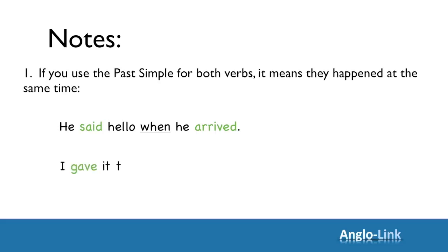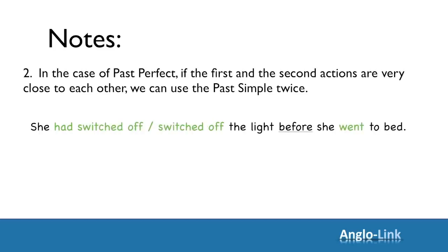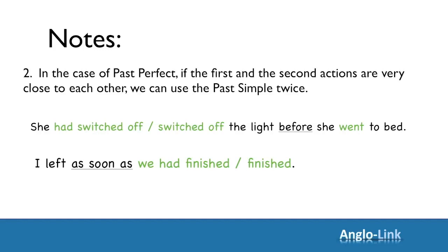Another example: I gave it to her when I saw her. Also, if two actions happen quickly one after the other — very close to each other — you can use the past simple instead of the past perfect. For example, someone switches off the light and goes to bed immediately: you can say 'she had switched off the light before she went to bed' or simply 'she switched off the light before she went to bed.' Similarly: 'I left as soon as we had finished' — because the two actions happened very close to each other — you can use the past simple twice: I left as soon as we finished.